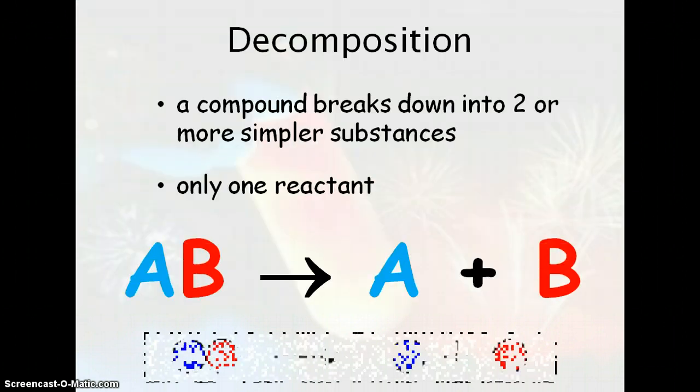The next type of chemical reaction is decomposition, the opposite of synthesis. A compound breaks down into two or more simpler substances. The big hint here is you only have one reactant, only one thing on the left side. So you have AB, a compound, breaking down into simpler forms of A plus B—the blue and red together separating into separate blue and red.